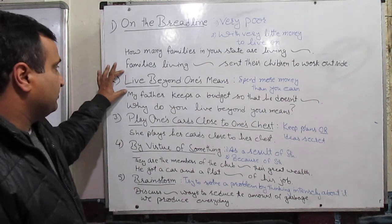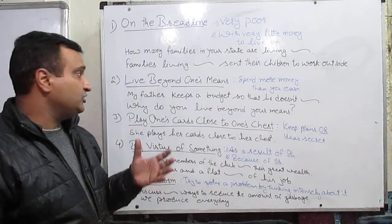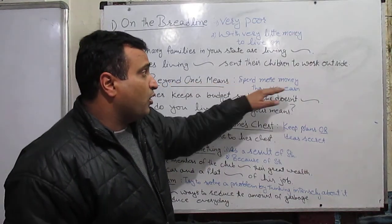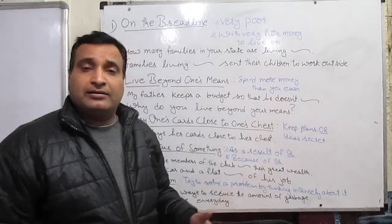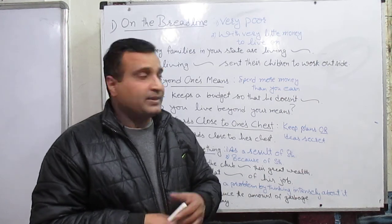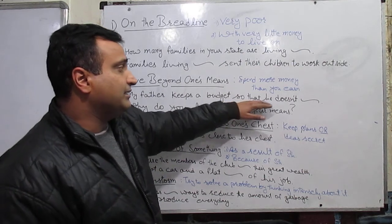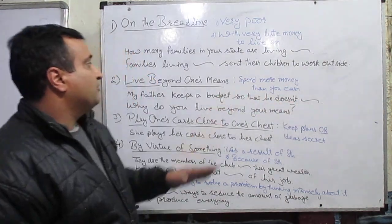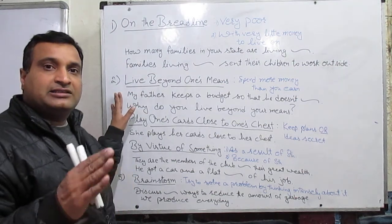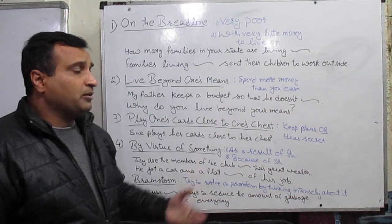This vocabulary also polishes your language. The second example: 'live beyond one's means' — it means to spend more money than you earn, like spending more than your income. For example: 'My father keeps a budget so that he doesn't live beyond his means' — my father spends only as much as his income allows. Also: 'Why do you live beyond your means?' — mostly students go beyond their earnings.